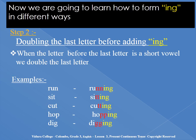Step 2. Now we are going to learn how to form -ing in different ways. We double the last letter before adding -ing. It's very easy, children. Look at this carefully: when the letter before the last letter is a short vowel, we double the last letter. Examples: run → running, sit → sitting, cut → cutting, hop → hopping, dig → digging. Can you see the -ing forms in the red letters? That's because we double the last letter.